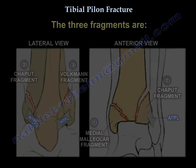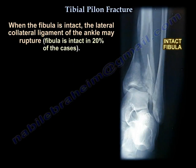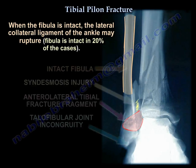On this CT scan, you can see the three fragments of the pylon fracture, and also you can see the joint impaction. When the fibula is intact, the lateral collateral ligament of the ankle may rupture.